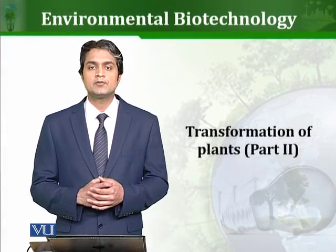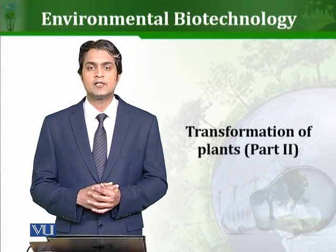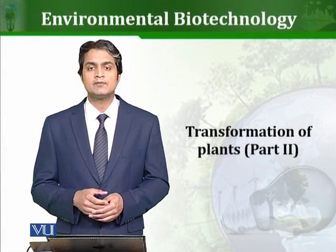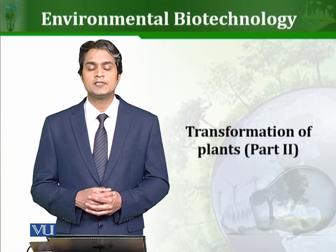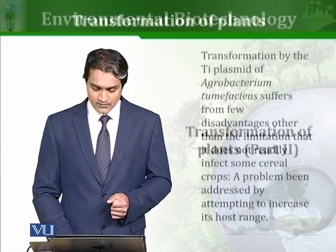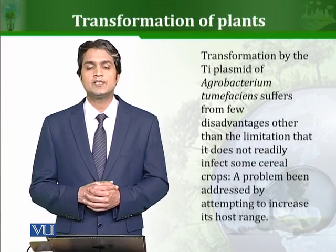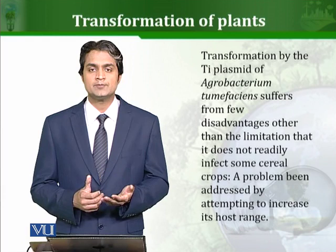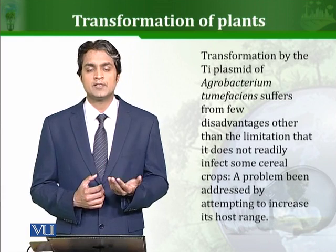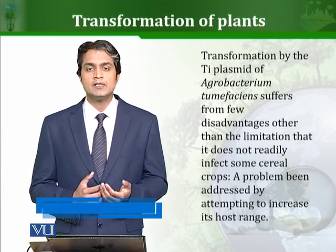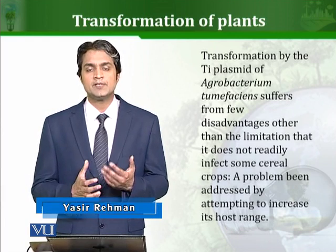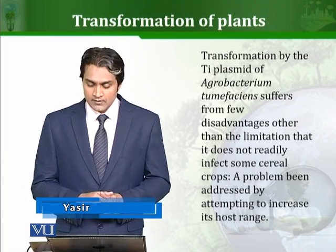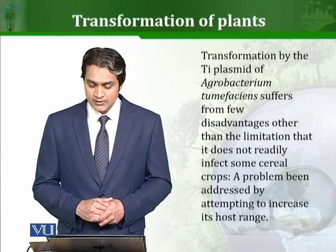Let's continue talking about transforming plant cells. In today's lesson, we will talk about how we can transform plant cells by using Ti plasmids. Ti plasmids are found in Agrobacterium tumefaciens. Ti stands for tumor-inducing plasmids. They have genes which can be transferred to plants and cause a kind of tumor. Those genes can be replaced by our gene of interest and thus our gene of interest can be transferred into the plants.